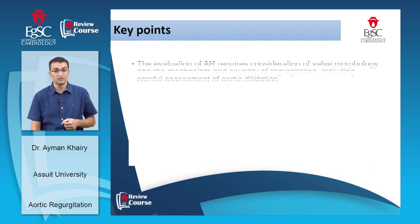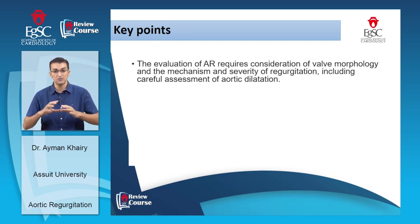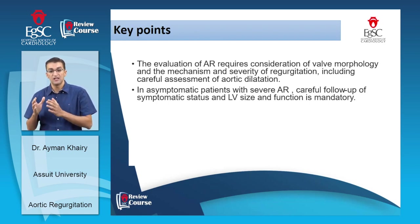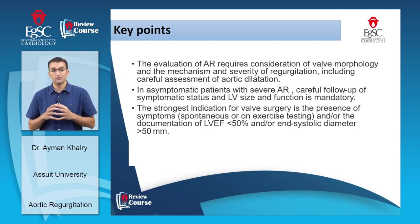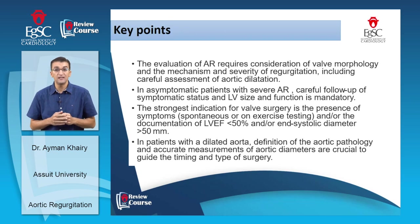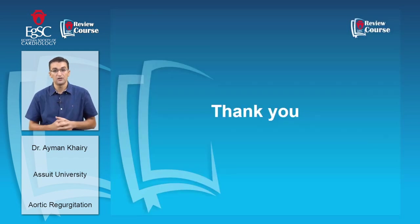Key points: Evaluation of aortic regurgitation requires consideration of aortic valve morphology, mechanism of regurgitation, and severity including careful assessment of the aortic root for dilatation. In asymptomatic patients with severe AR, careful follow-up of symptom status and LV size and function is mandatory. The strongest indications for valve surgery are symptoms (spontaneous or on exercise testing), LVEF less than 50%, and/or end-systolic diameter more than 50 mm. In patients with dilated aortic root, accurate measurement by CT or CMR is crucial in guiding the timing and type of surgery.